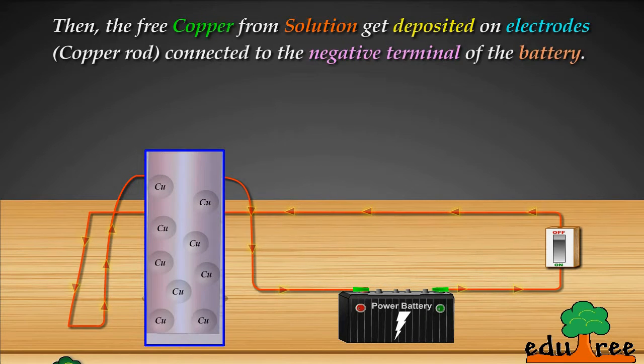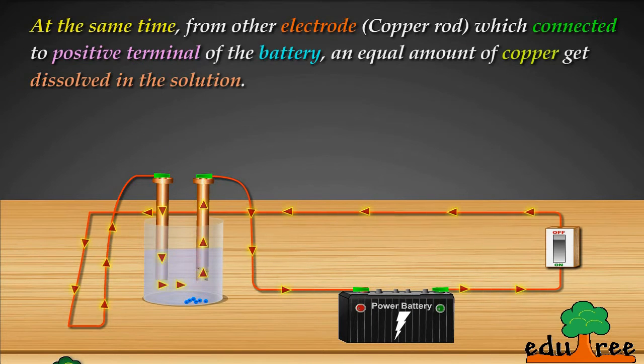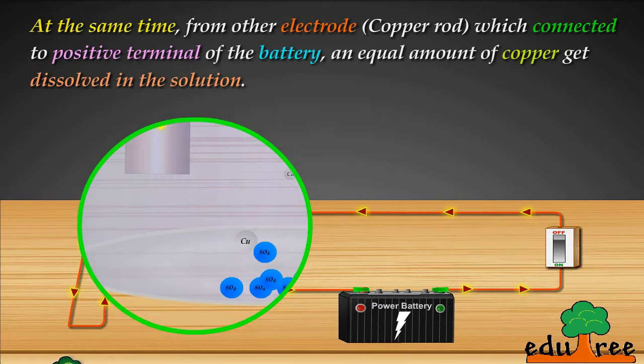Then, the free copper from the solution gets deposited on the electrode, the copper rod connected to the negative terminal of the battery. At the same time, from the other electrode, the copper rod which is connected to the positive terminal of the battery, an equal amount of copper gets dissolved in the solution.